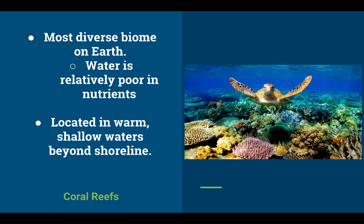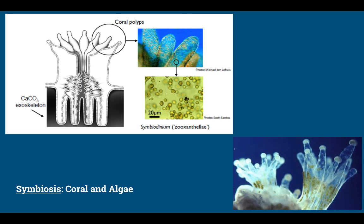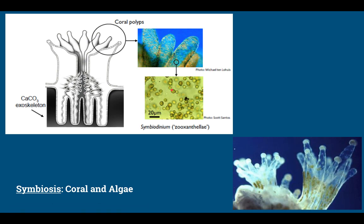Coral reefs are one of the most diverse biomes on Earth, which is interesting because the water is relatively low in nutrients. They are found in warm, shallow waters beyond the shoreline. Corals are tiny animals that secrete calcium carbonate — limestone — forming an external skeleton. This hollow-tube animal with tentacles grabs plankton floating by, and despite the low nutrients, productivity is possible because of algae living within the tissues of the corals.